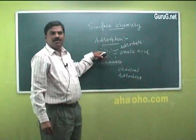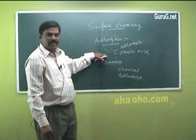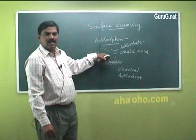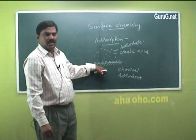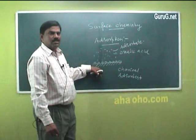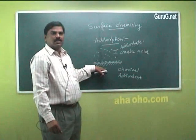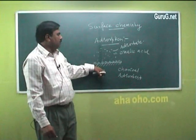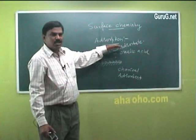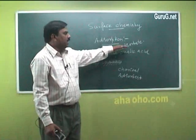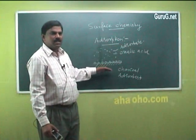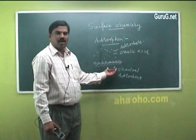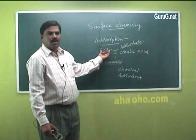The atoms or molecules of oxalic acid get attracted by the solid surface of charcoal — this process is called adsorption. Another example is adsorption of hydrogen gas or oxygen gas on nickel surface. The substance which is going to be adsorbed on the solid surface is called the adsorbate. The substance which takes in the gases or liquids is called the adsorbent — usually it is a solid, and the adsorbate is usually a liquid or gas.